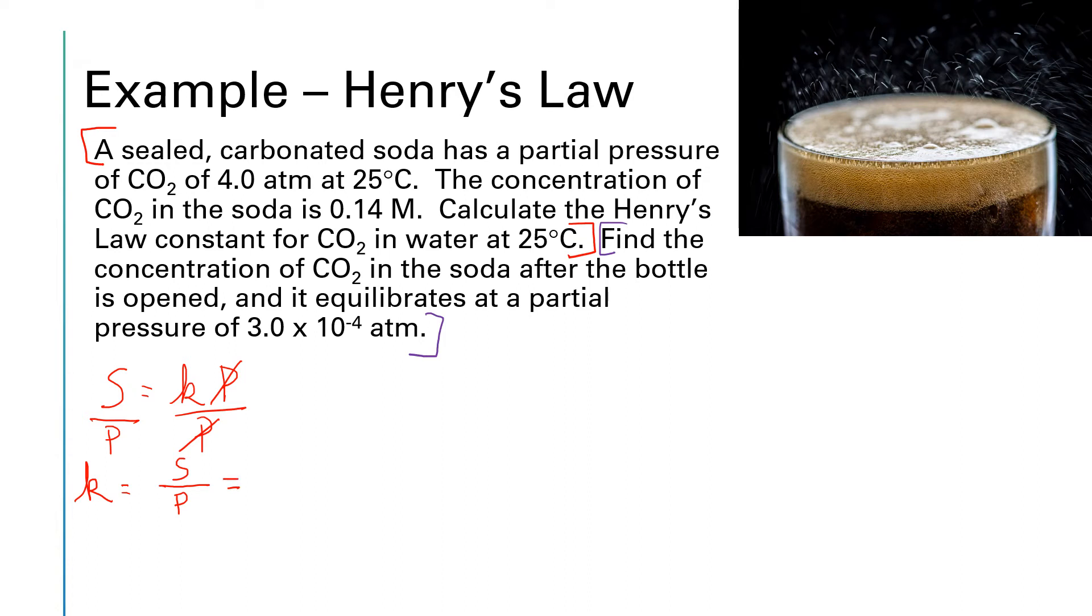So up in the top for the solubility, we were told the concentration of CO2 is 0.14 molar. Down in the bottom for the partial pressure of the gas, it's given as 4 atmospheres. So if I run those numbers through a calculator, I will take 0.14 divided by 4 and that gives me a number for this constant of 0.035 and the units are molarity per atmosphere. So that's the Henry's law constant for this problem.